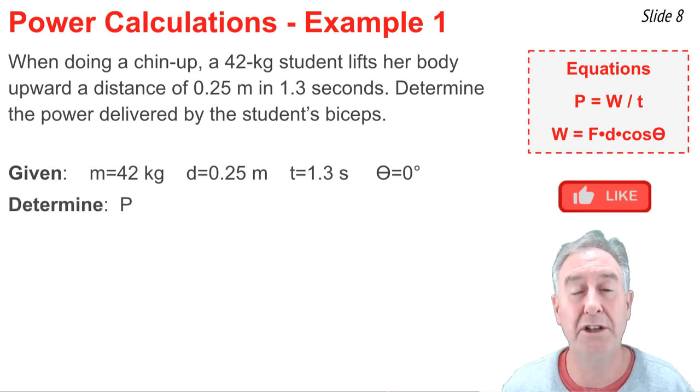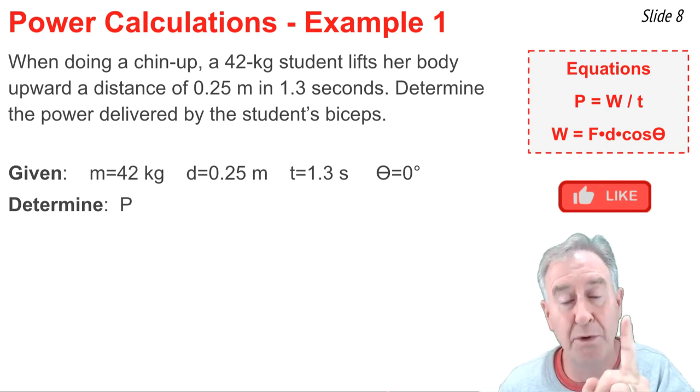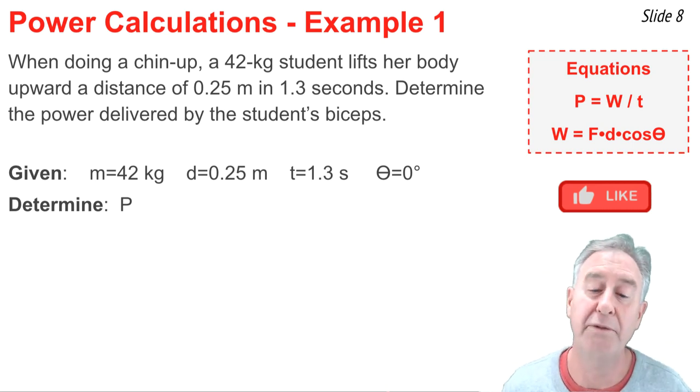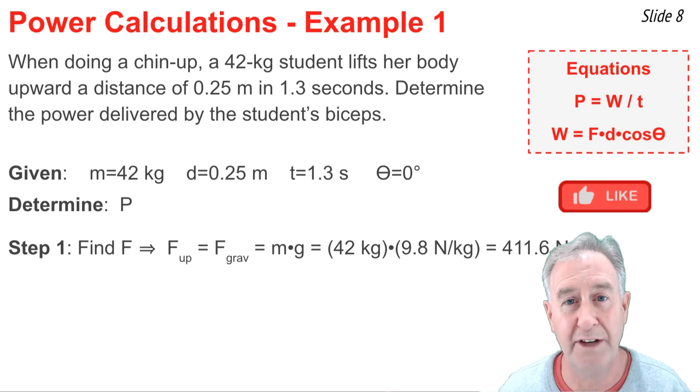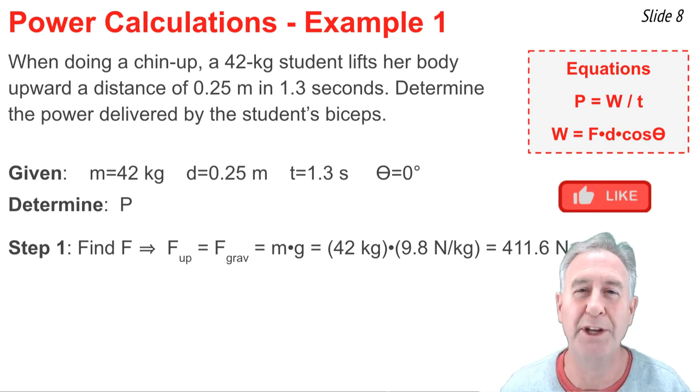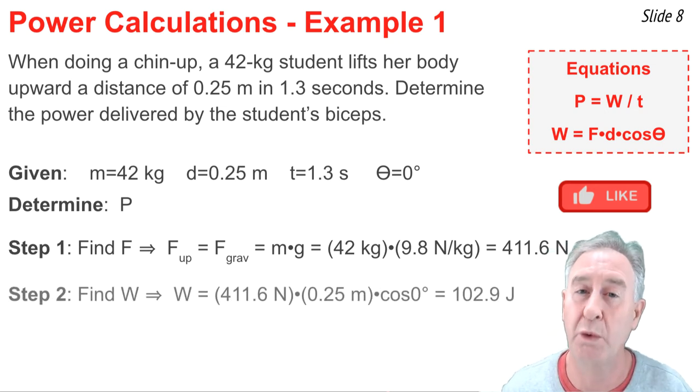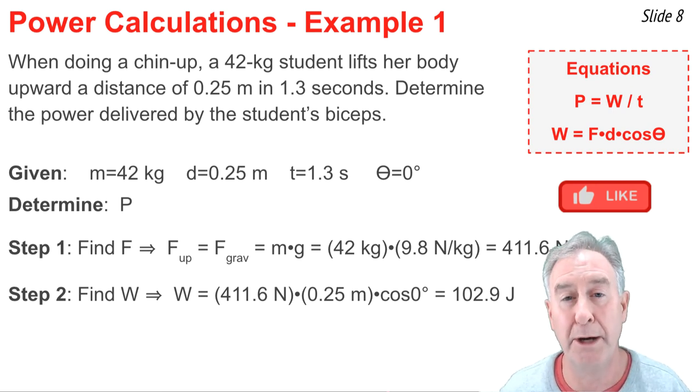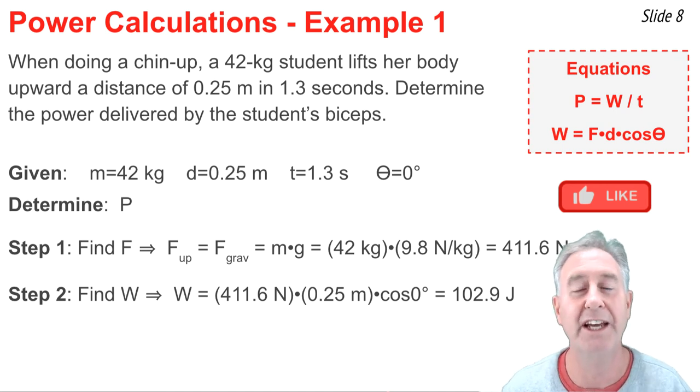My first step would be to determine the force. If this person lifts themselves upward at constant speed, then the up force has got to be equal to the down force. So, we can safely say that the up force is equal to the force of gravity, m times g, 42 newtons times 9.8 newtons per kilogram, and that's 411.6 newtons. Now, I have to determine the work done in lifting herself 0.25 meters. So, I'm going to take the force, multiply by 0.25 meters, and multiply by the cosine of 0 degrees, and I get 102.9 joules of work.